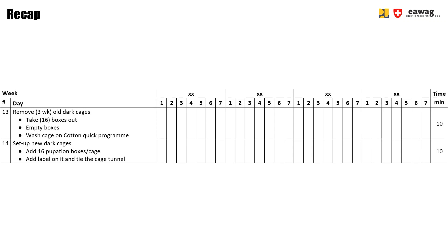We have now passed through the operations, which are quite short, as most of the stage takes place as a natural process of the black soldier fly. The checklist introduced at the beginning separates these two operations into two distinct units. The order of operations is reversed: we first remove the old dark cage before setting up a new one. We remove the 16 boxes, empty and clean them, and wash the cage on a cotton quick program in the washing machine. After cleaning the dark cage frame, we set up the new dark cage by moving in the 16 pupation boxes and adding the label showing the date of the new dark cage.